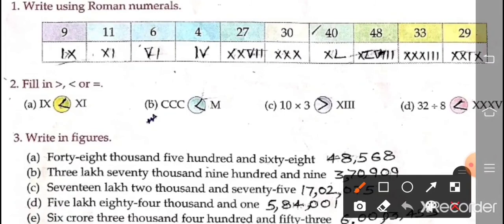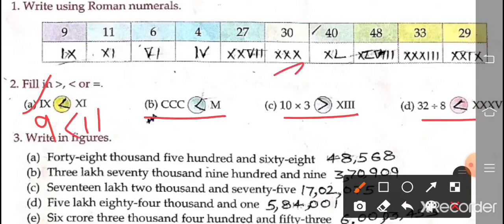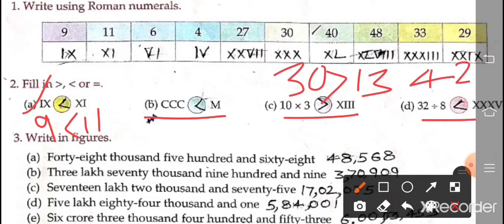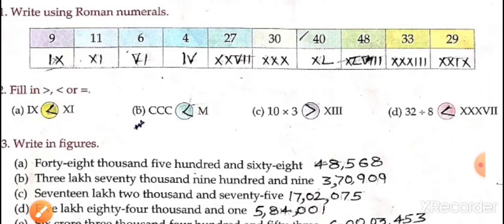Now fill in more than, less than, or equal. This is 9 and this is 11, so 11 is greater. This is 10 multiplied by 30 and this is 30, so this is greater. And this is 8 for 32, and this is 25, so this is greater. So like this we have to do.